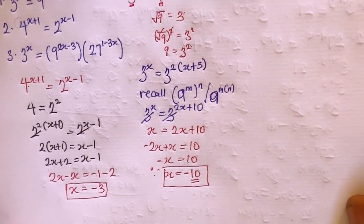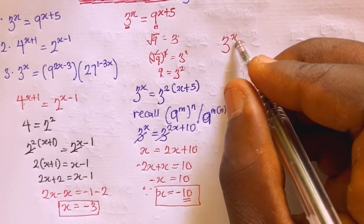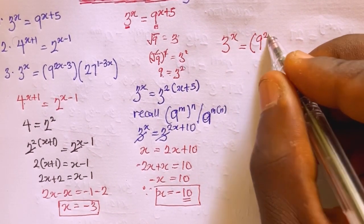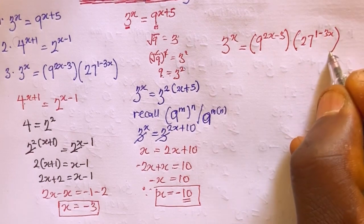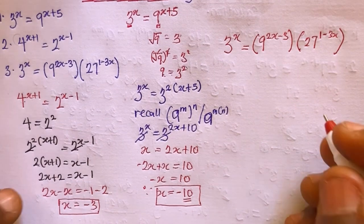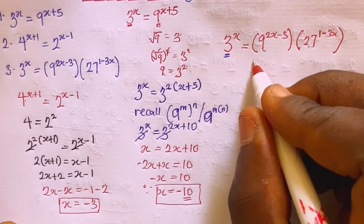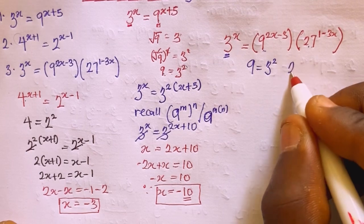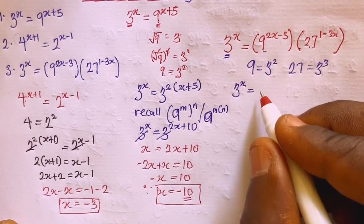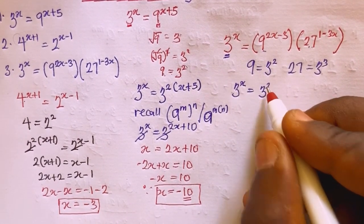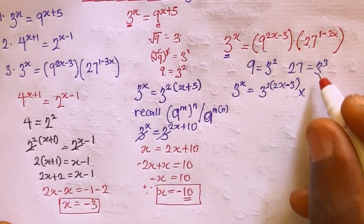Now the last one: 3 raised to the power x equals 9 raised to the power 2x minus 3, multiplied by 27 raised to the power 1 minus 3x. We express everything in terms of base 3: 9 equals 3 squared and 27 equals 3 cubed. So I rewrite as 3 raised to x equals 3 raised to 2 times bracket 2x minus 3, times 3 raised to 3 times bracket 1 minus 3x.